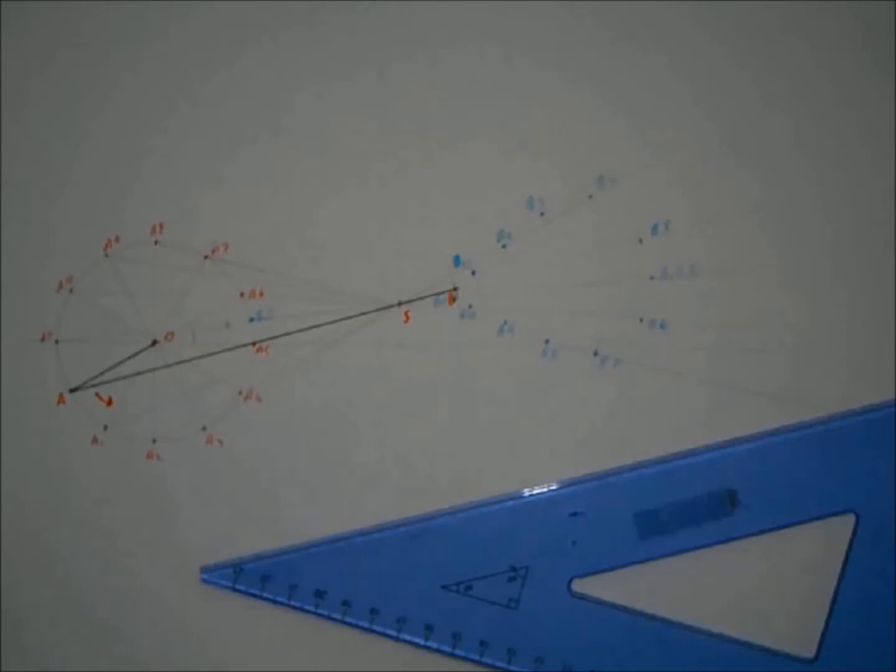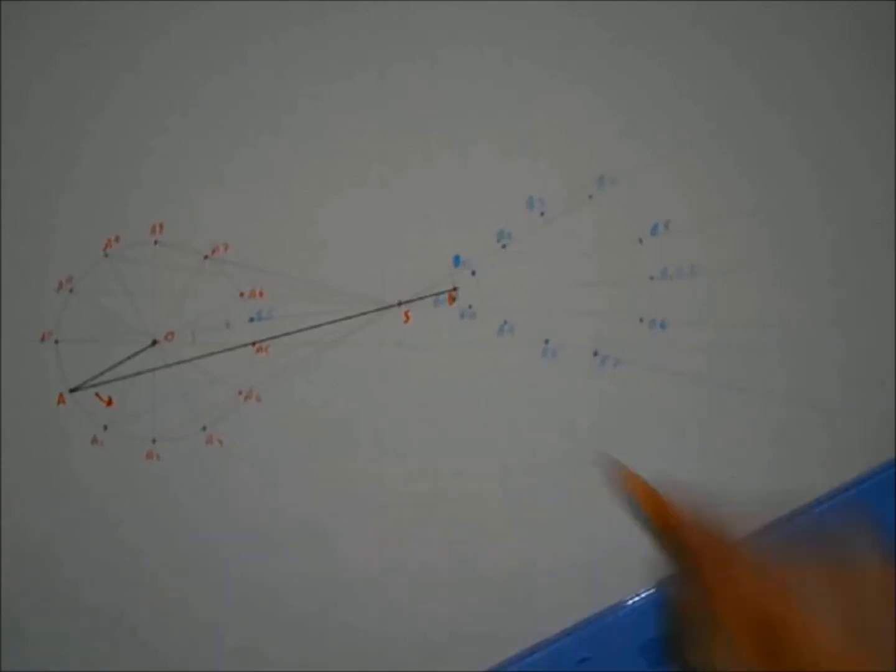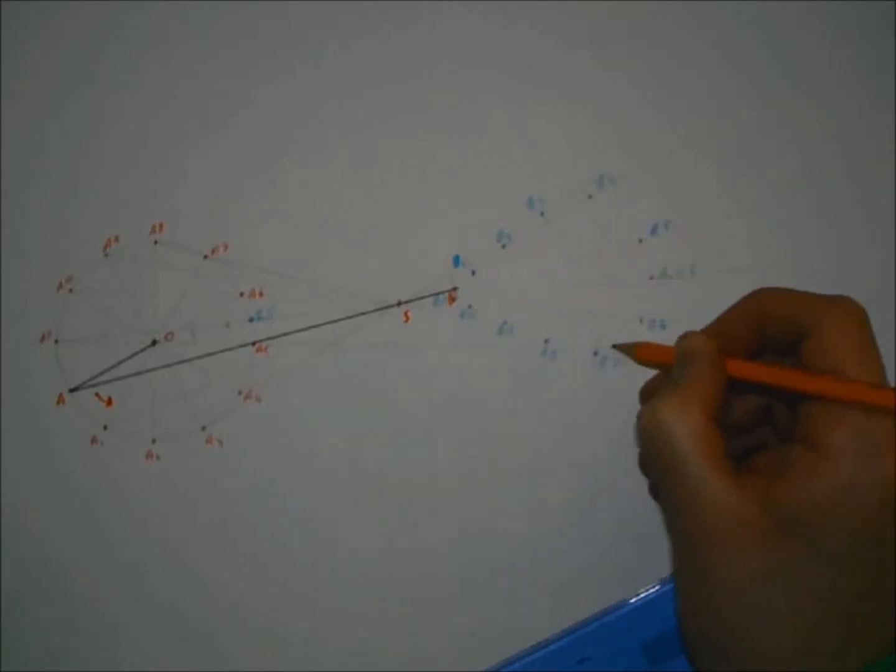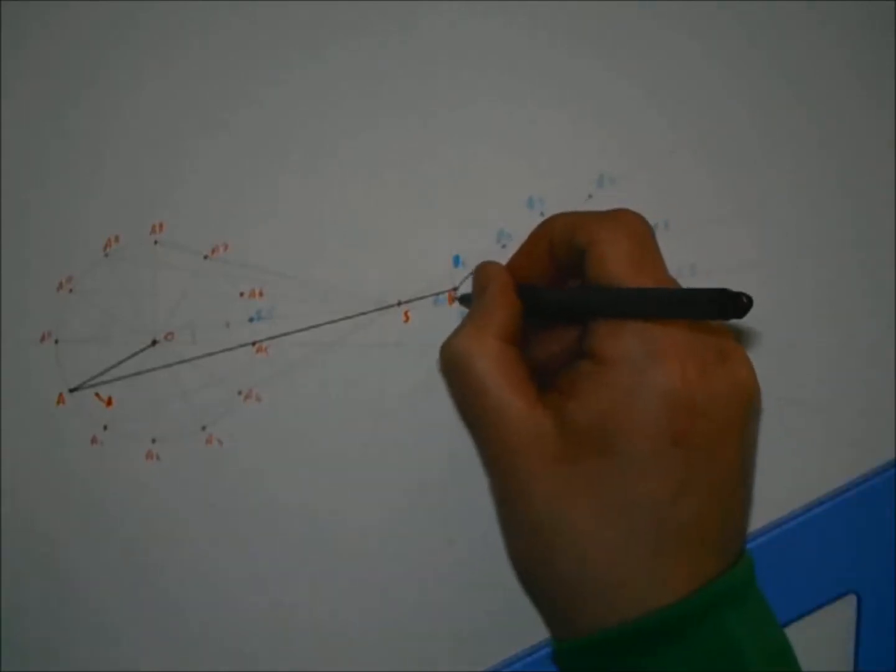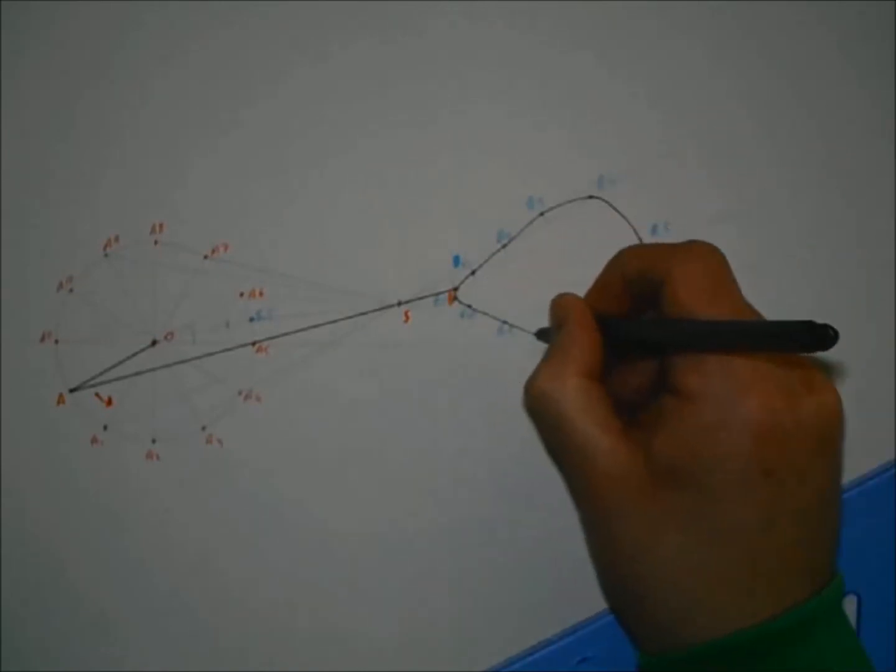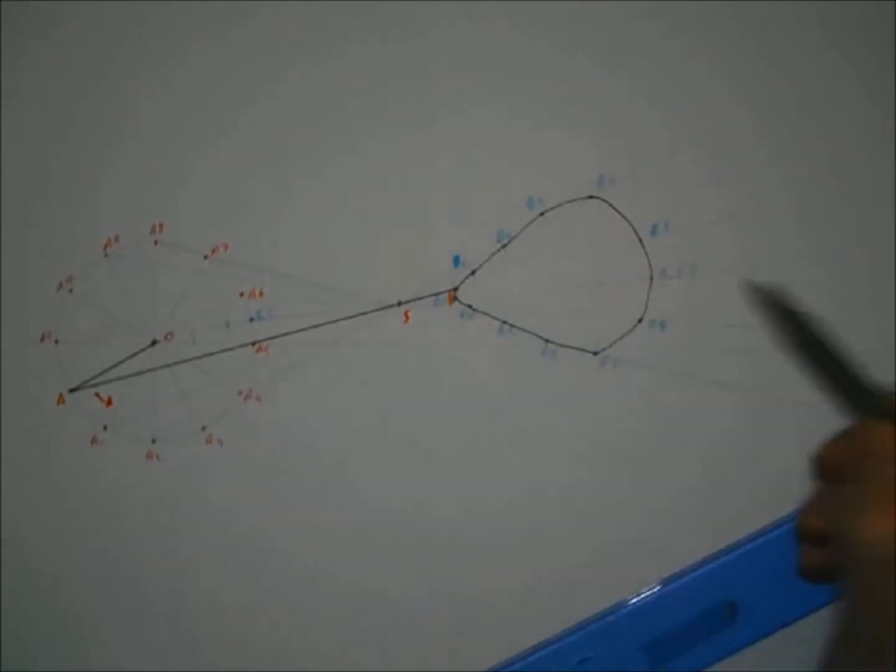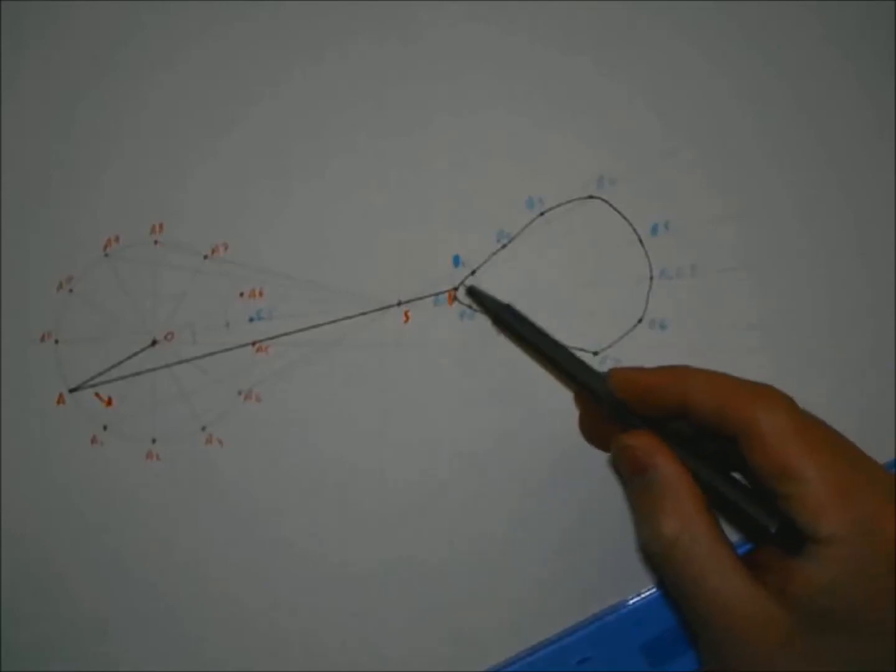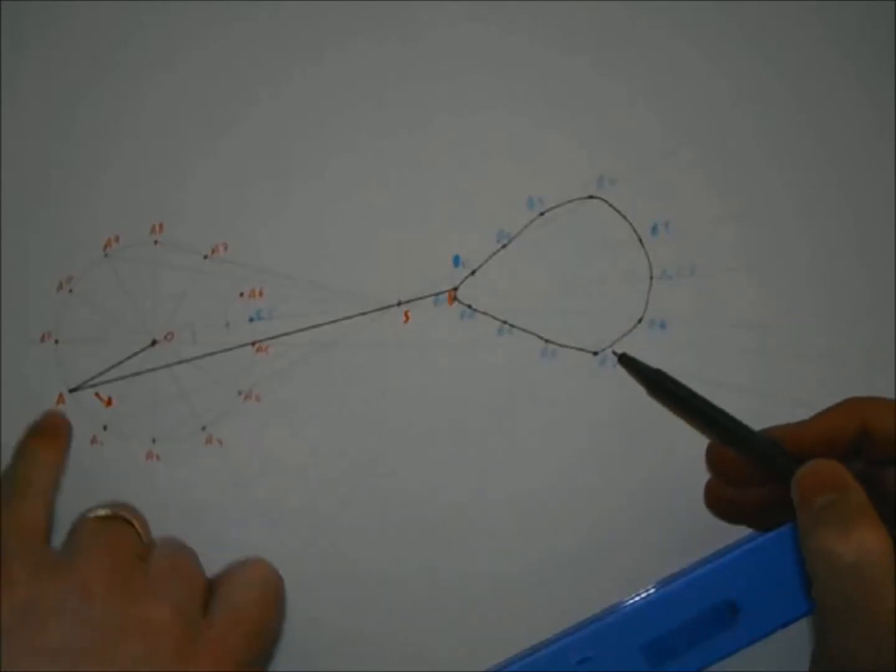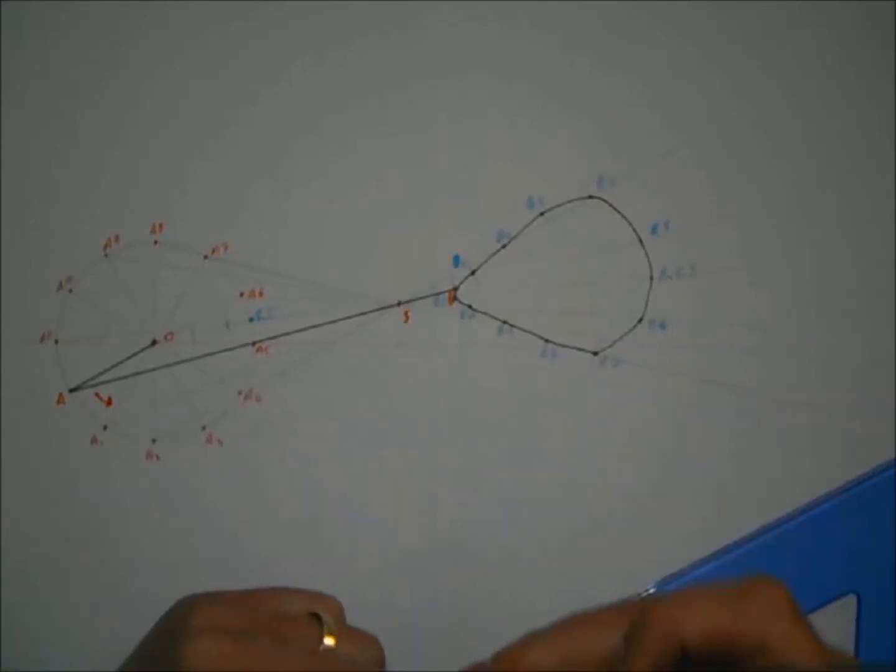That is the locus of point B as it travels along—as A, the crank OA, travels along pushing it through point S. So that's the first part of the question done.